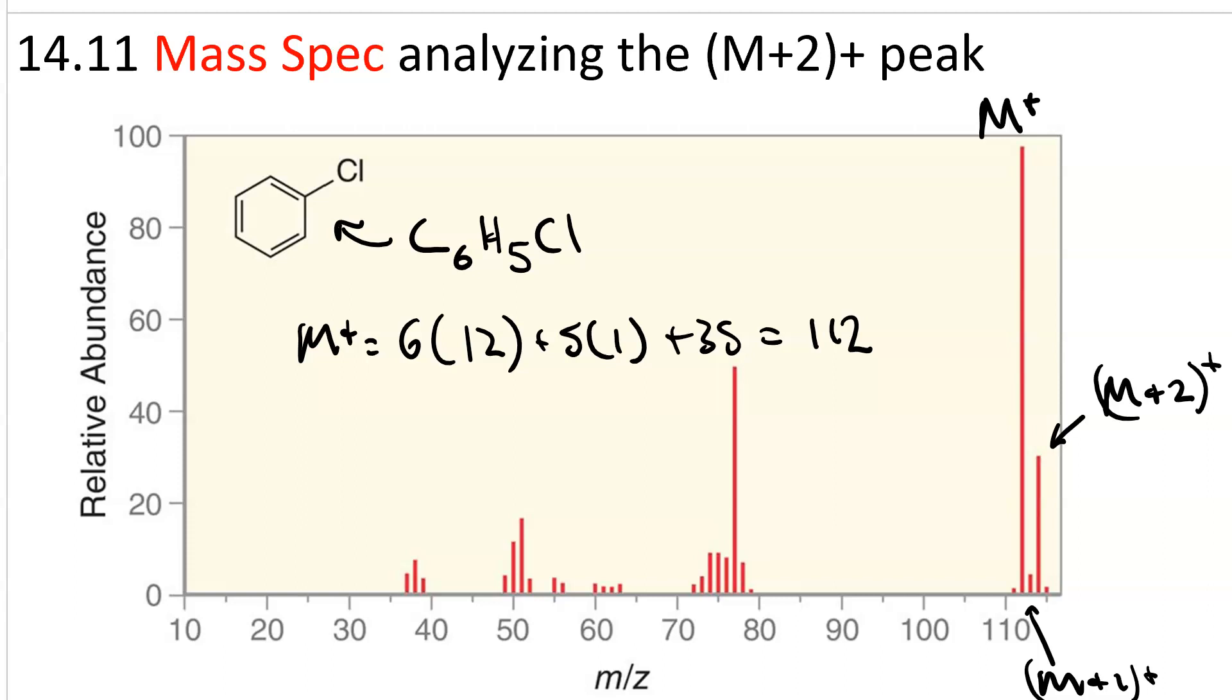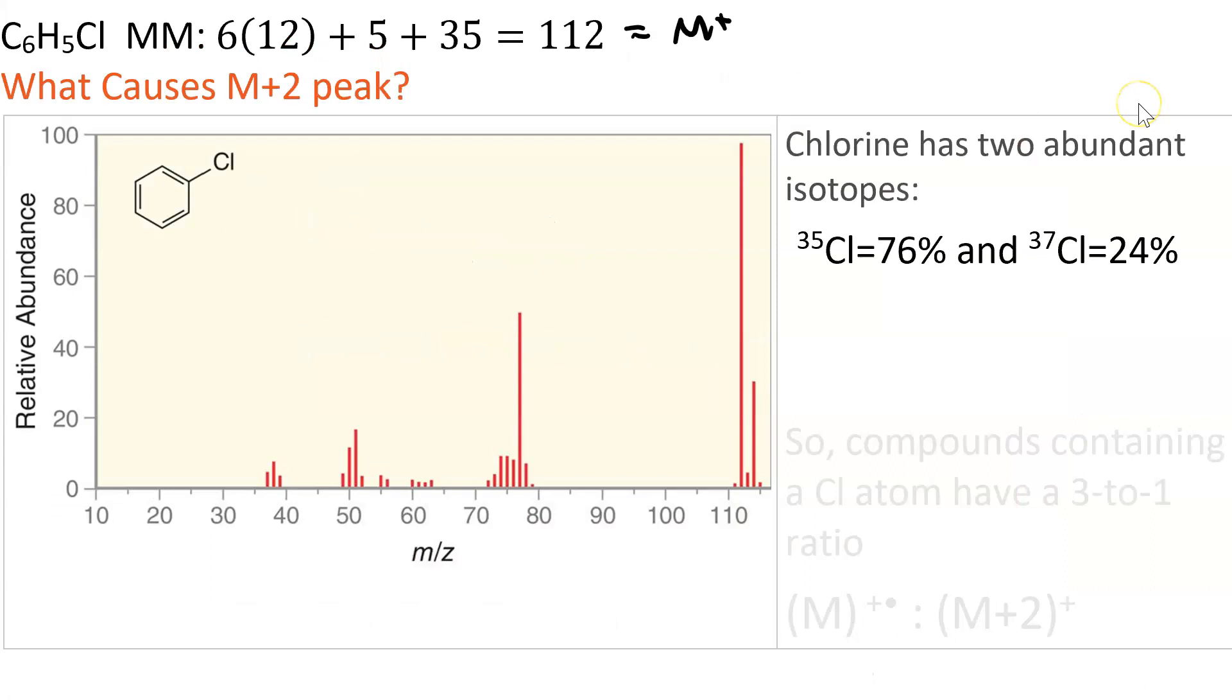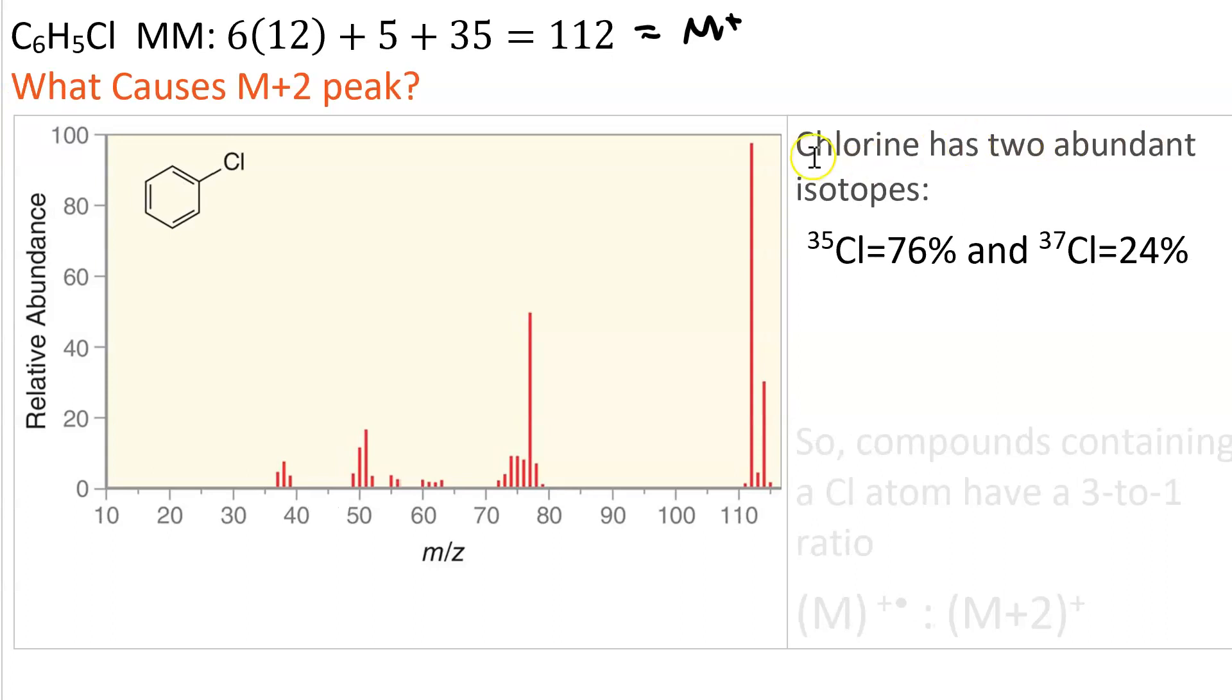What causes that M plus 2 peak? Well, the reason is that chlorine has two abundant isotopes: 76% of all chlorine is chlorine-35, and 24% of all chlorine is chlorine-37. That means 76% of these chlorobenzene molecules will be with chlorine-35, but 24% of them will have a chlorine-37 instead.